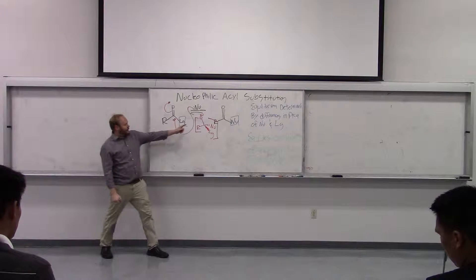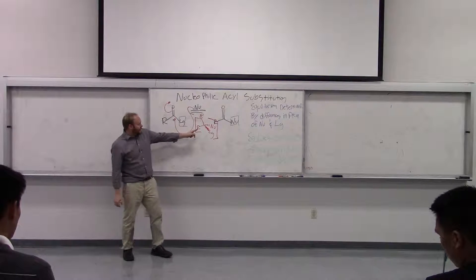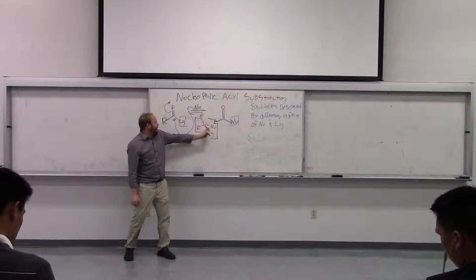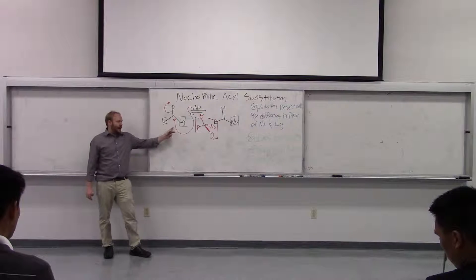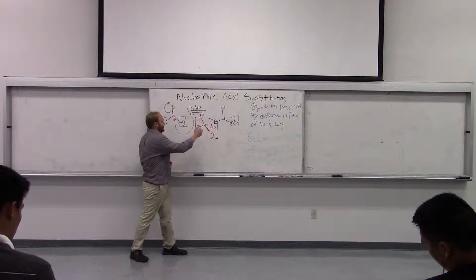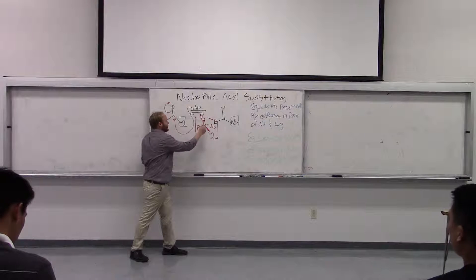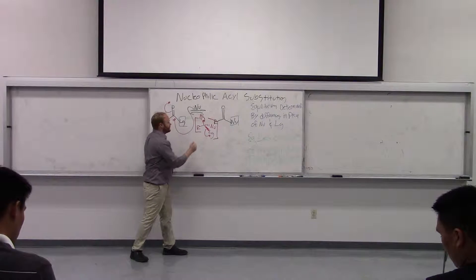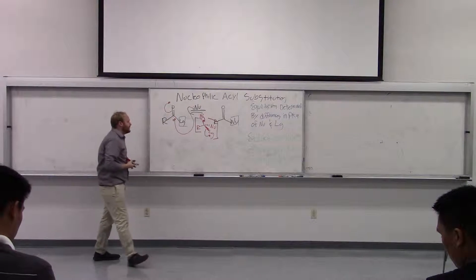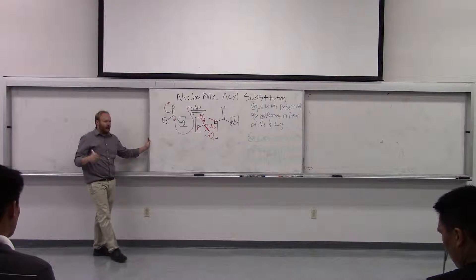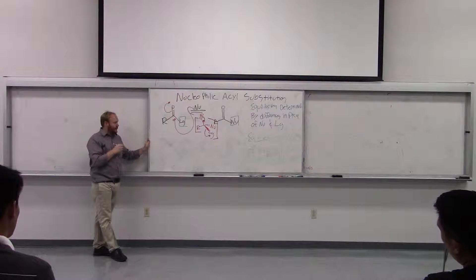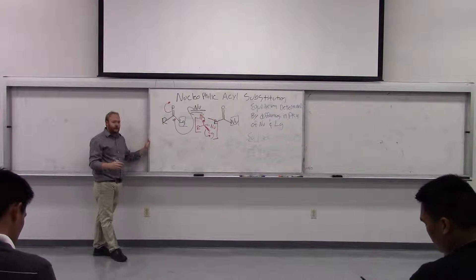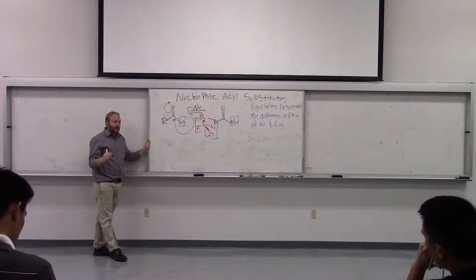And now these electrons can kick down, either kicking out the nucleophile to give us the leaving group back, or kicking out the leaving group to give us a product. So this reaction is the definition of reversible, and there's always going to be an equilibrium with this chemistry.